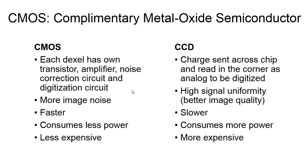In CCDs, the charge is sent across the chip as an analog signal, read at one corner of the array where fluctuations are separated into individual readings to represent pixels, then they are digitized. In CMOS sensors, each individual detector element, or DEXEL, has its own transistor, amplifier, noise correction circuit, and digitization circuit so that it outputs digital data that moves down traditional wires to exit the sensor.